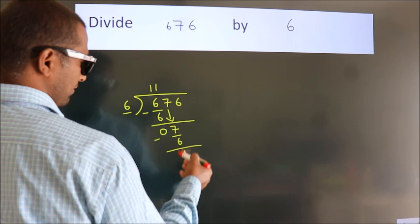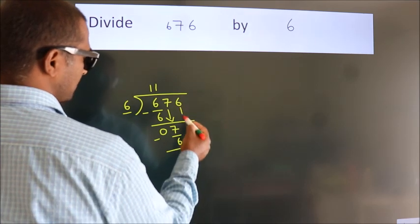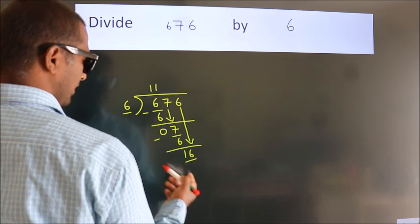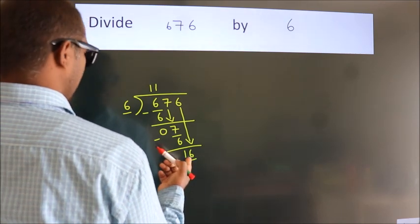After this, bring down the next number. Six down. So sixteen - a number close to sixteen in the six table.